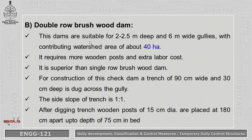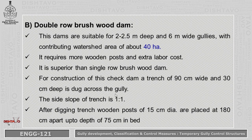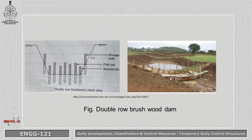Next, double row brushwood dam. These dams are suitable for gullies 2 to 2.5 meter deep and 6 meter wide with a contributing watershed area of about 40 hectare. They require more wooden posts and extra labor cost, but are superior to single row brushwood dams in stability and water retention. For construction, a trench of 90 centimeter wide and 30 centimeter deep is dug across the gully, maintaining a 1:1 side slope. Wooden posts of 15 centimeter diameter are placed 180 centimeter apart and embedded 75 centimeter into the gully bed. As shown in the diagram, brushwood material is placed between the two rows of posts so that water can be stored on the upstream side.